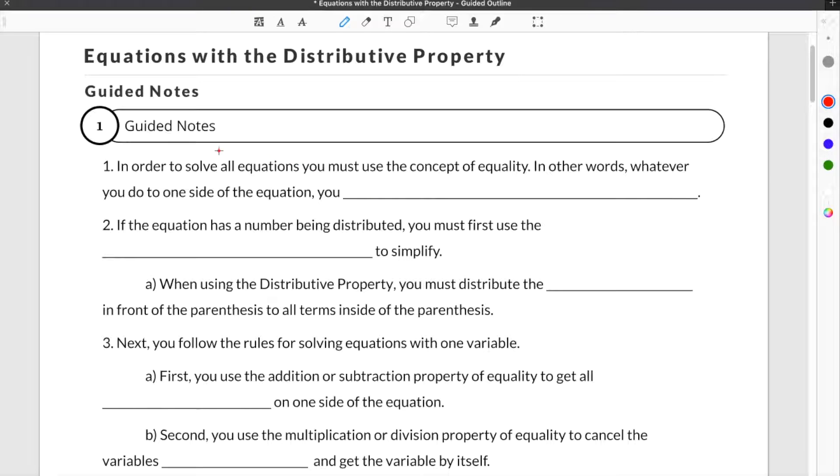Here we are in our guided notes about equations with a distributive property. In order to solve all equations you must use the concept of equality. In other words, whatever you do to one side of the equation you must also do to the other. If the equation has a number being distributed, you must first use the distributive property to simplify.